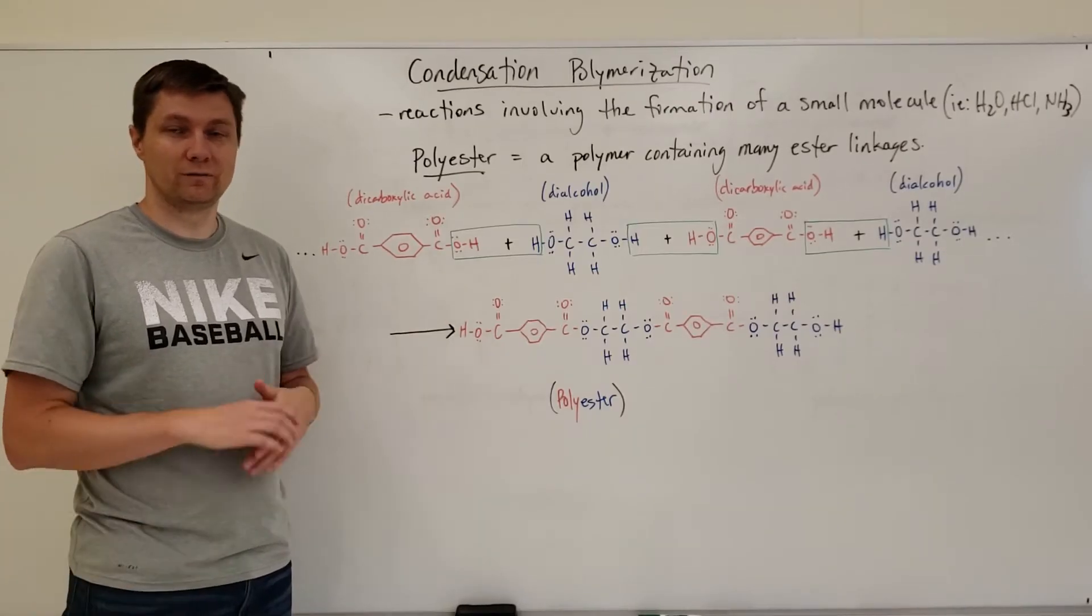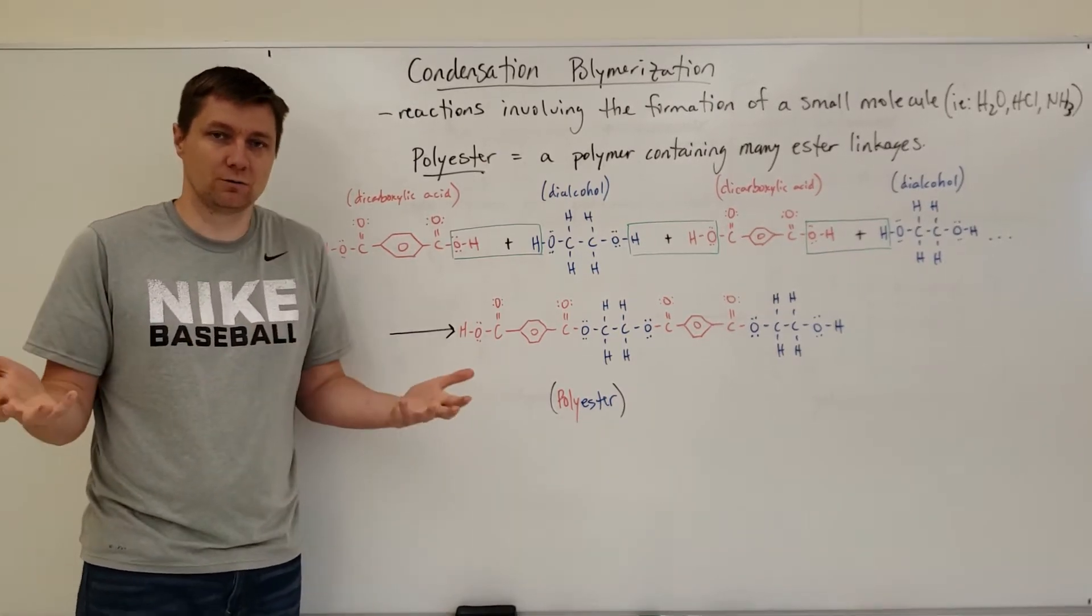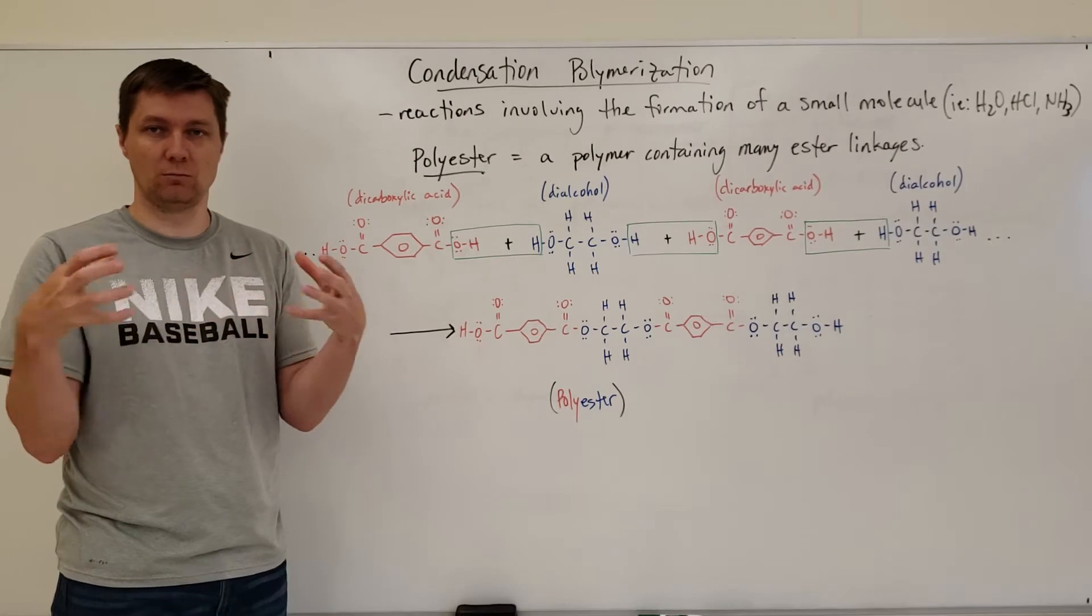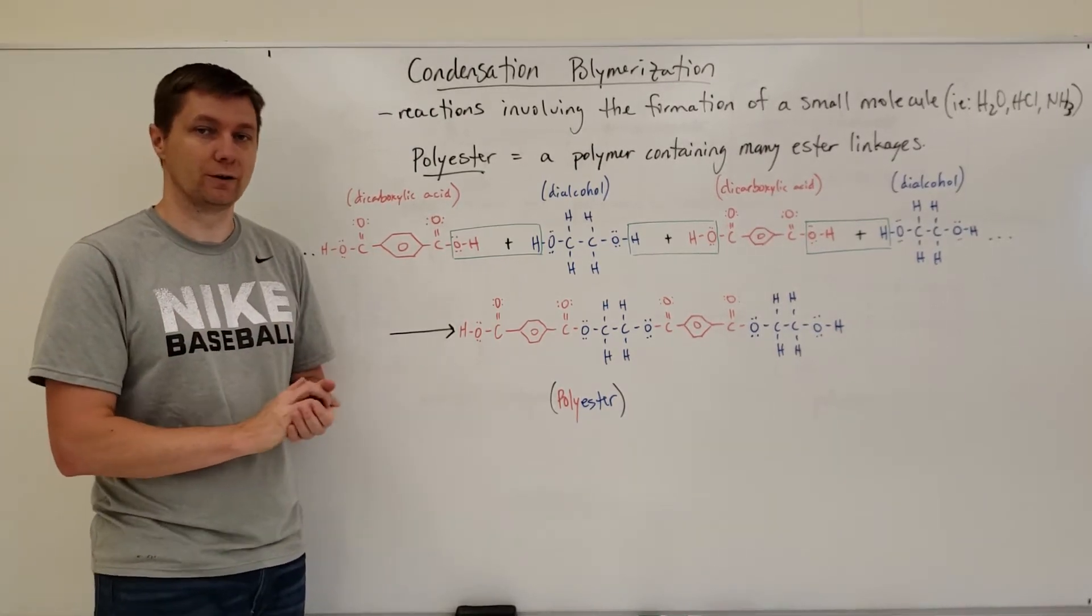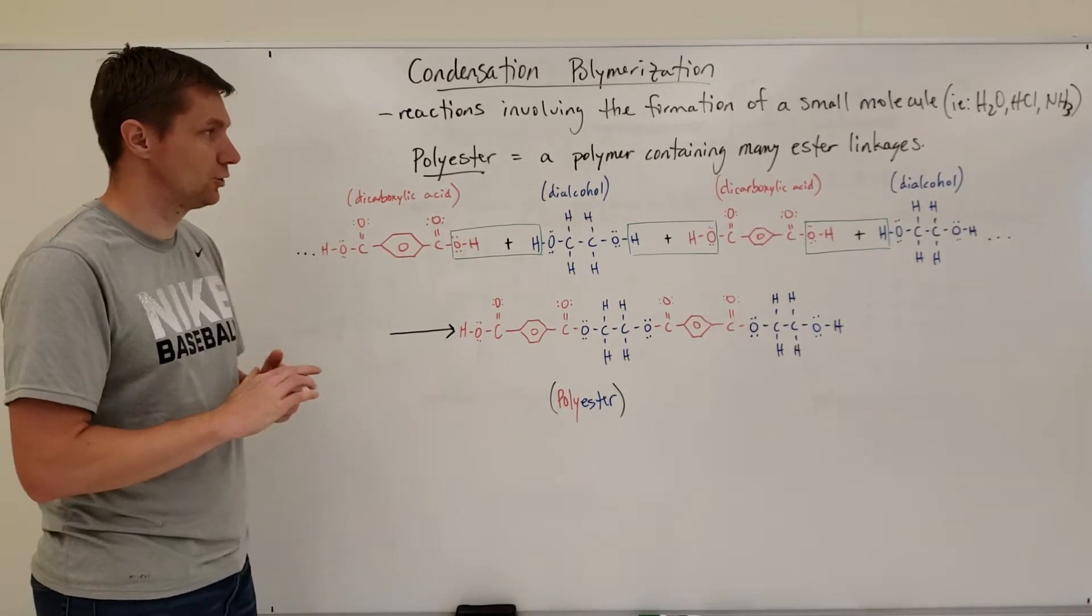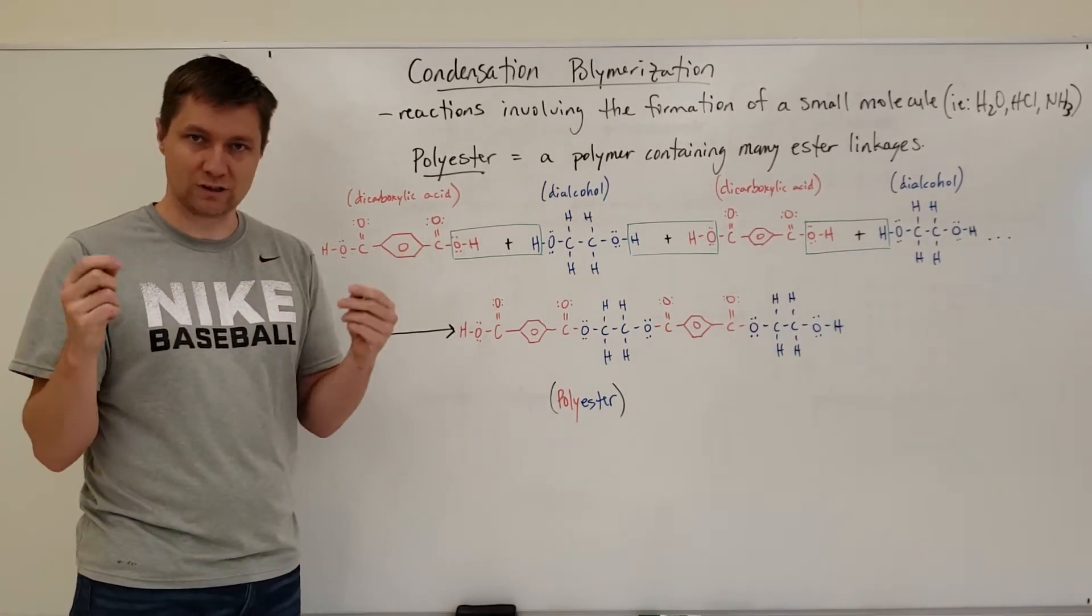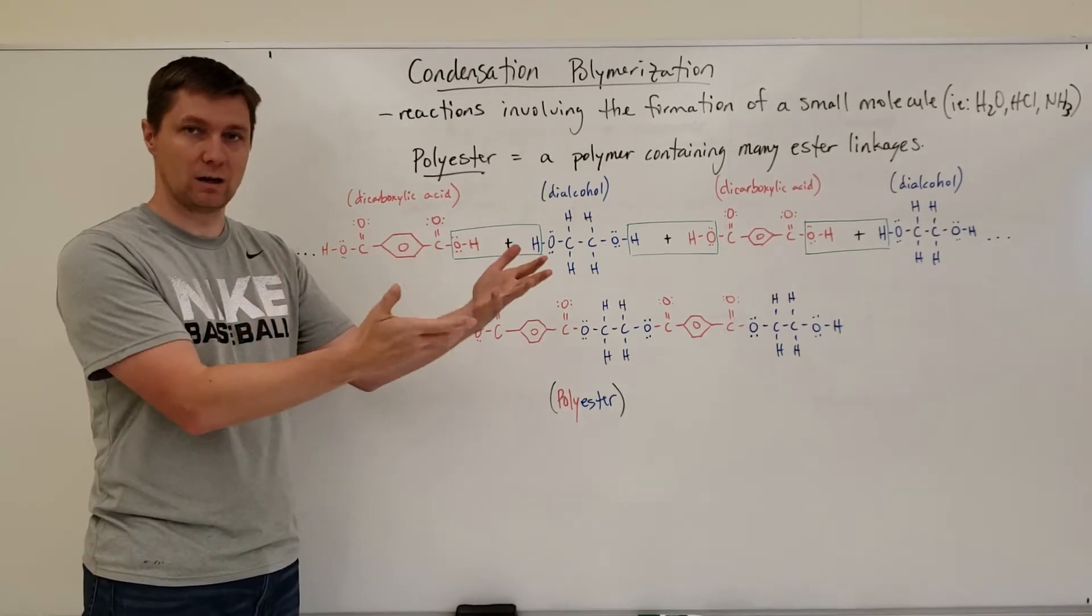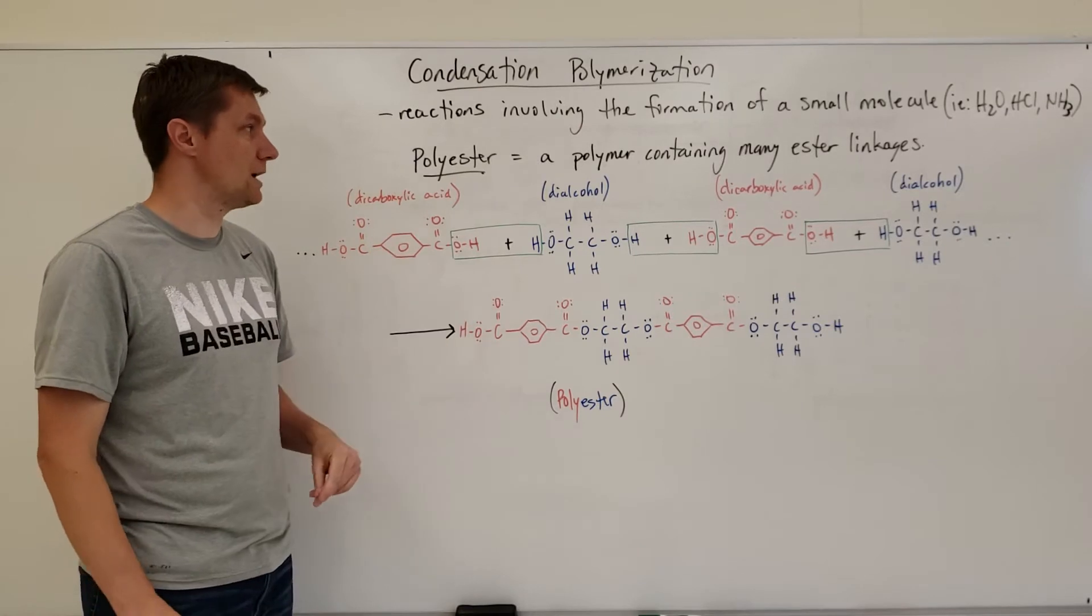All right, so the second type of polymerization reactions are condensation reactions. And what condensation really means is that we just have a small molecule that comes off when these monomers attach to each other. As I showed you in the previous clip with the template reaction, we have a bunch of monomers that react to make a polymer. So the monomers that exist in condensation reactions, one of them that we can use are ester linkages.